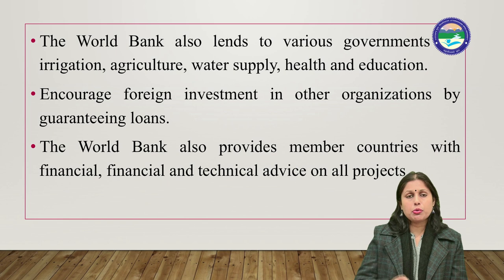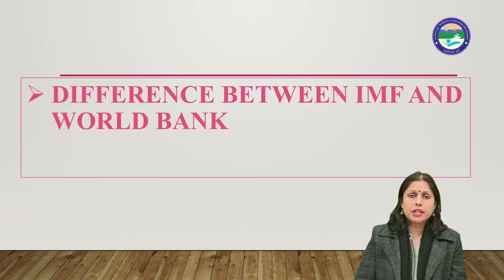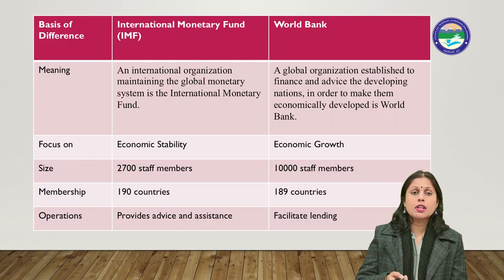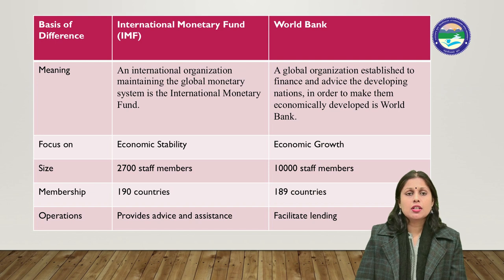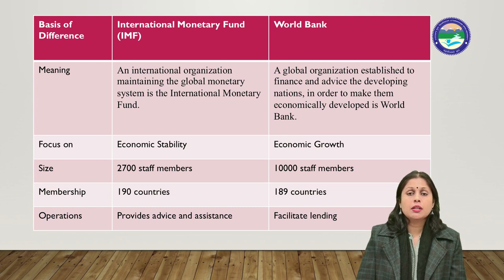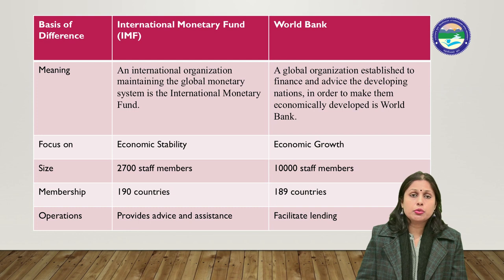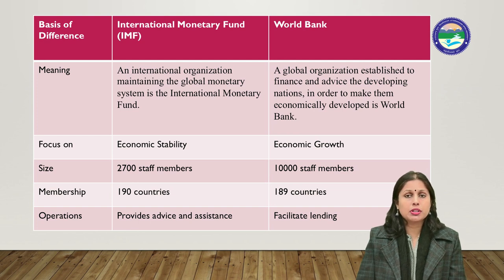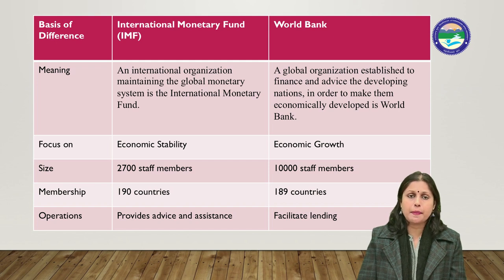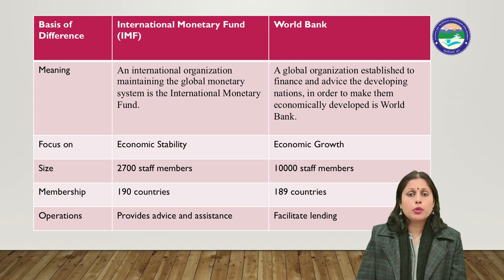Now let's look at the difference between IMF and World Bank. The International Monetary Fund maintains the global monetary system, whereas the World Bank is established to finance and advise developing nations. IMF focuses on economic and financial stability, whereas World Bank focuses on economic growth and development. In terms of size, IMF has 2,700 staff members whereas World Bank has 10,000 staff members. Both institutions have 190 member countries.